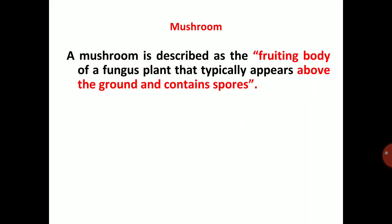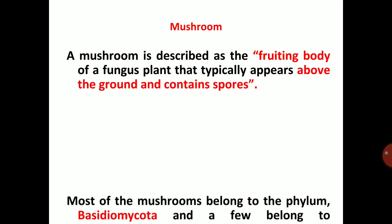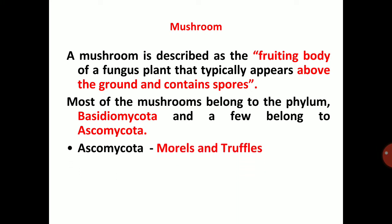What is a mushroom? A mushroom is described as the fruiting body of a fungus that typically appears above the ground and contains spores. It contains the progeny of basidiomycota fungi. Most mushrooms belong to phylum Basidiomycota, and a few belong to Ascomycota — the ascomycota mushrooms are called morals and truffles.